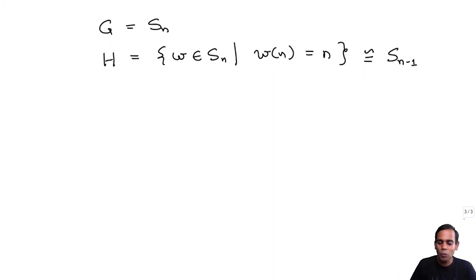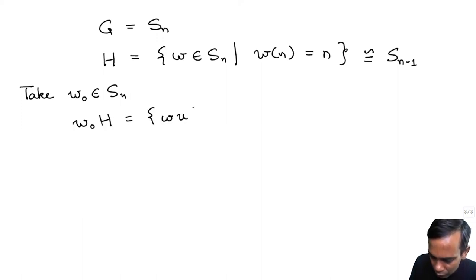And now let's ask ourselves what are the cosets of H in G. So here is a nice observation. Suppose I take some element W0 in SN. So take some element and let's look at W0 H.